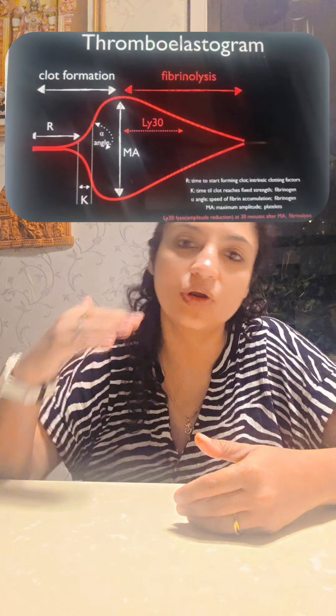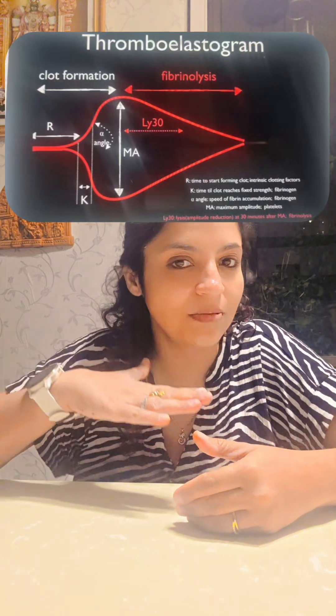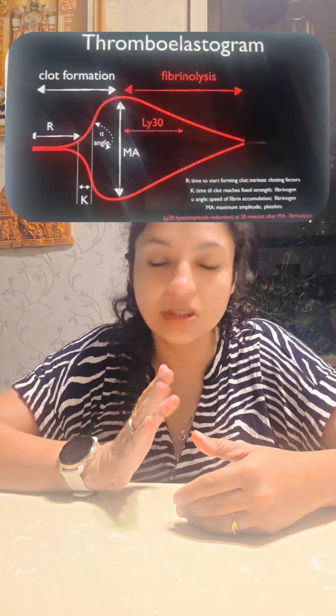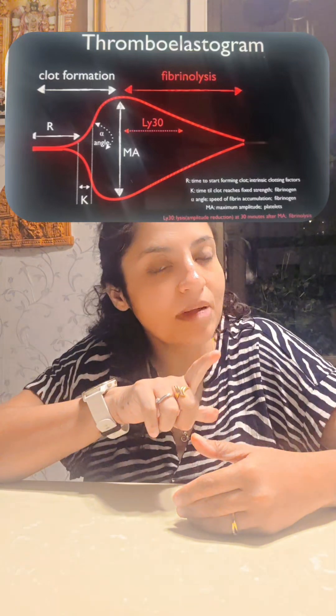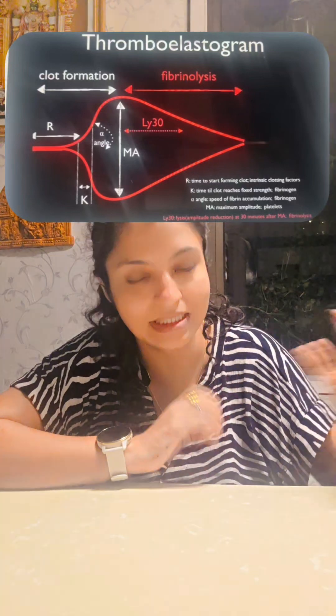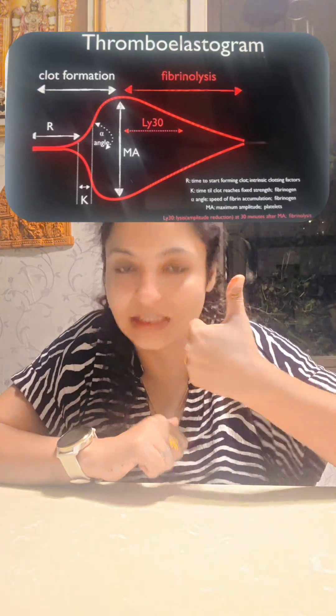There are different parameters in ROTEM and TEG, but the standard parameters you need to know are: the time taken to start the clot, the speed of clot formation, the maximum amplitude — which depends upon the platelets — and then fibrinolysis. That's why the graph appears like this, which is the simple graph you should remember.